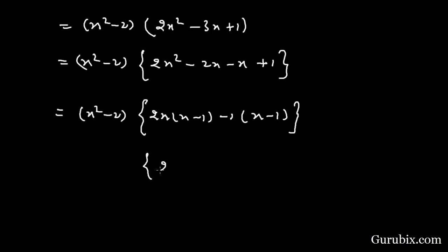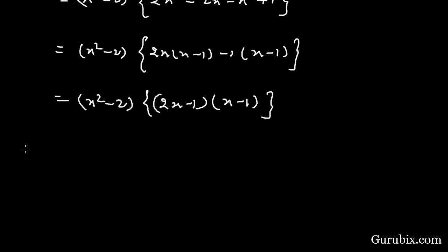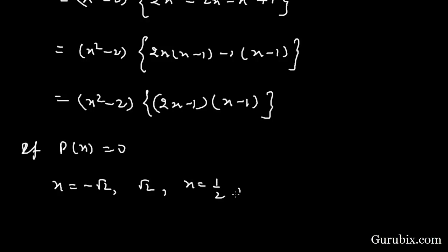This gives (2x minus 1)(x minus 1). Setting p(x) equals 0, we get four zeros: x equals minus √2, x equals √2, x equals 1/2, and x equals 1. So these are the four zeros of the given biquadratic polynomial p(x). Thank you.